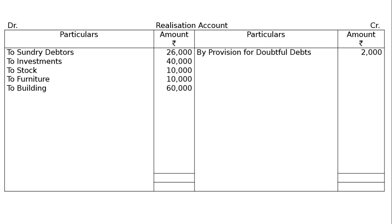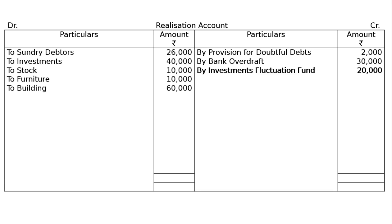On the credit side, we will have provision for doubtful debts 2,000, bank overdraft 30,000. Also, investment fluctuation reserve is there on the credit side. Because if investment and investment fluctuation reserve both are there, and it is a reserve — not a fund — it will be on the liability side and transferred to the credit side.